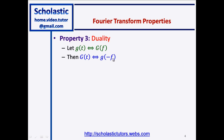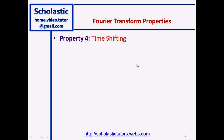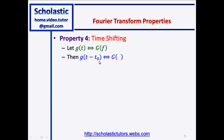Property number four: time shifting property. Again, we are given g(t) in the time domain and G(f) in the frequency domain. Then if you shift g(t) in the time domain by t0 — that is, g(t - t0) — then in the frequency domain it will become G(f) times e^(-j2πf·t0). The time shift becomes an exponential function in the frequency domain.